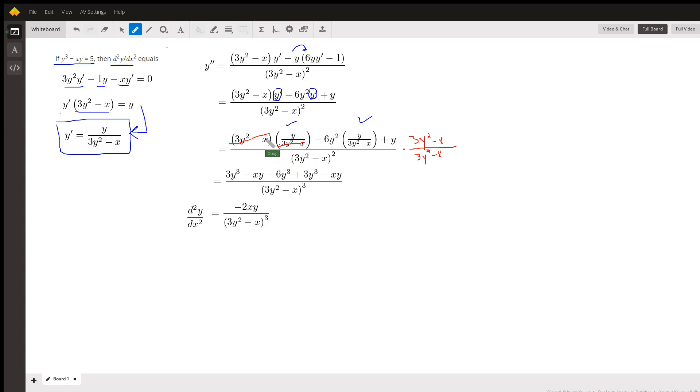Now to simplify this I would first notice that these 3y squared minus x's cancel out. So that first term is just left with the term y. And at that point I'd say well, this is a complex fraction. It's got a big fraction containing a little fraction, this one right here. So if I multiply numerator and denominator of the big fraction by this denominator, I will reach a fraction that's not complex.